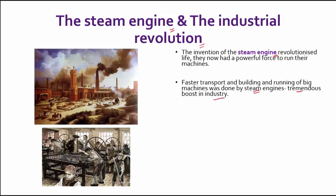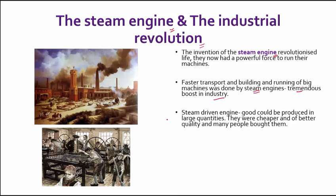Steam engines helped factories run. Earlier, goods were made by hand at people's own homes using simple tools. But with the coming of steam engines, people started using them in factories and goods could be produced in very large quantities. These goods were a lot cheaper and of better quality, so many people started buying them, and the demand for machine-made goods became more and more popular.